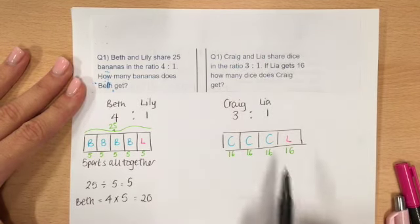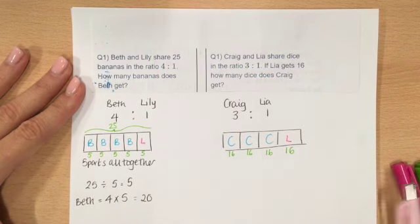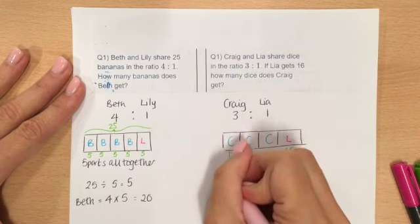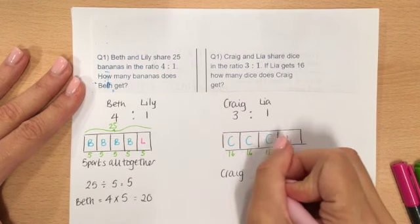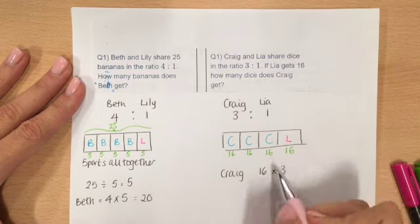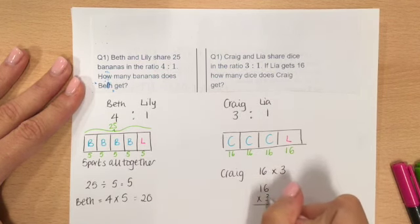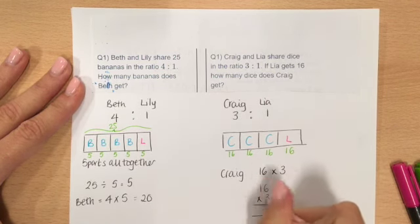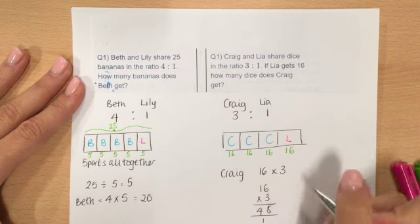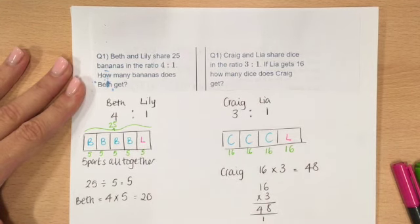So if Craig has 3 parts, he gets 3 lots of 16. So Craig is 16 times 3. Let's do that properly: 16 times 3 — 3 ones are 3, one more is 4, so 48. So therefore Craig gets 48.